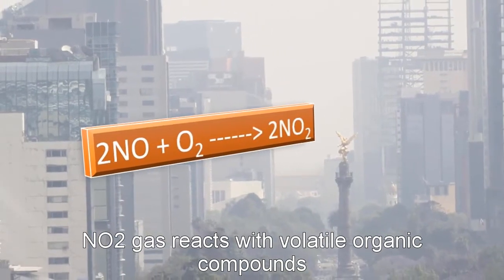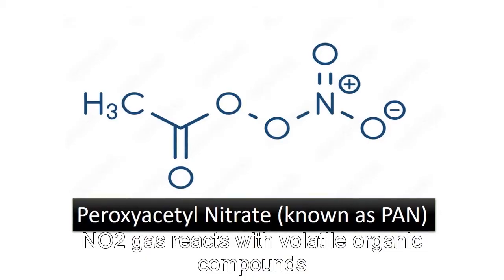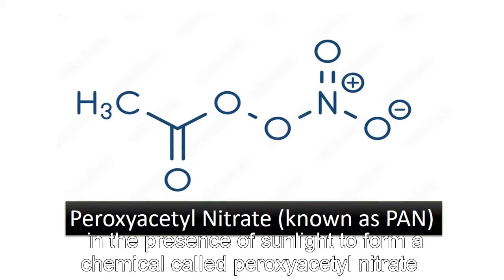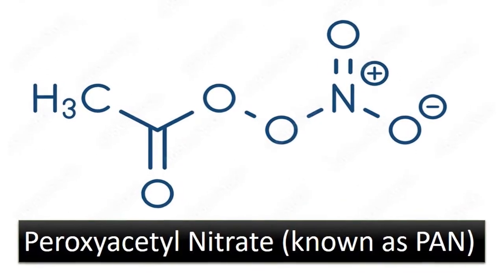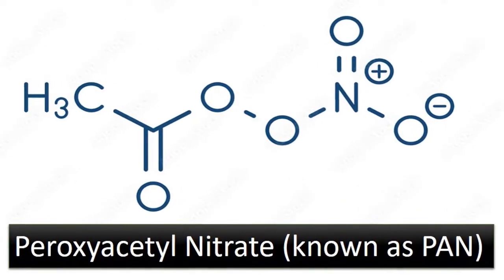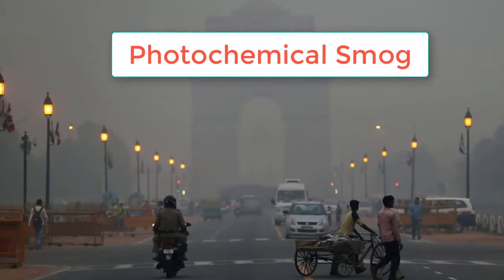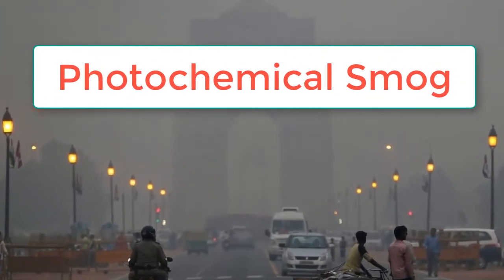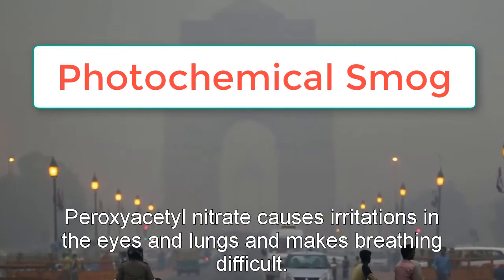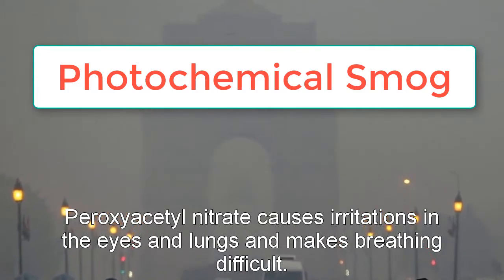Nitrogen dioxide gas reacts with volatile organic compounds in the presence of sunlight to form a chemical called peroxyacetyl nitrate, which causes photochemical smog. Peroxyacetyl nitrate causes irritation in the eyes and lungs and makes breathing difficult.